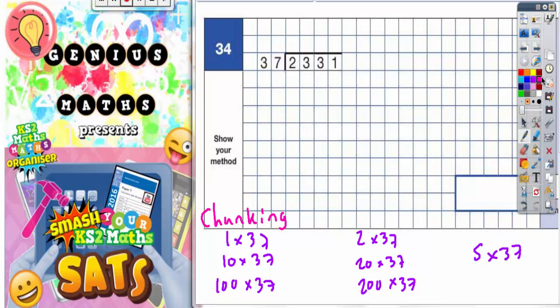Now we're going to work out what these chunks actually are. 1 lot of 37 is 37, and these should always be easy chunks you can do in your head. 10 lots of 37 is 37 with one zero on the end, so 370. 100 lots of 37 is 37 with two zeros on the end, so 3700.